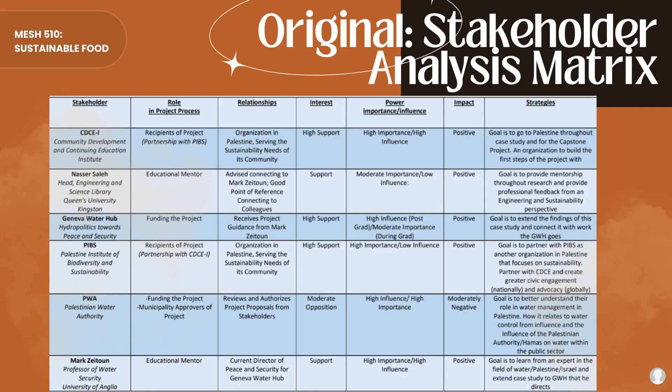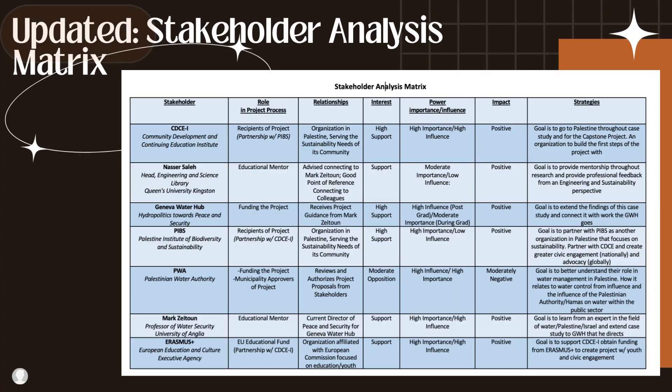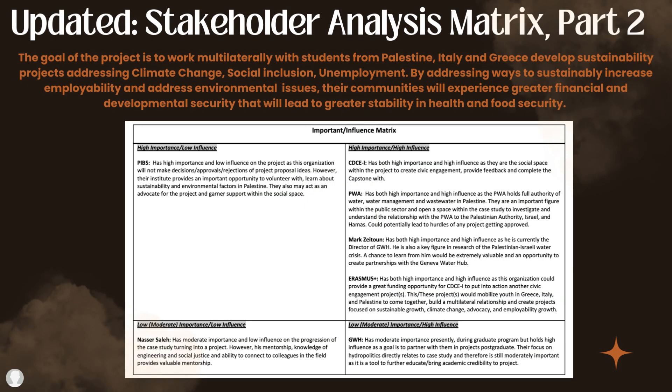On this slide, you will find my original stakeholder analysis matrix, while the updated slide now includes the pending partnership with Erasmus+. The goal of the project is to work multilaterally with students from Palestine, Italy, and Greece to develop sustainability projects addressing climate change, social inclusion, and unemployment. By addressing ways to sustainably increase employability and address environmental issues, their communities will experience greater financial and developmental security leading to greater stability in both health and food security.